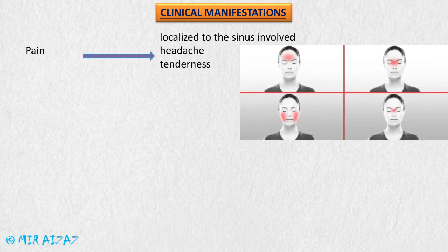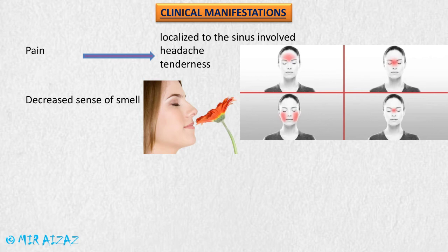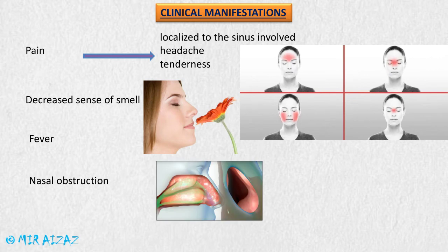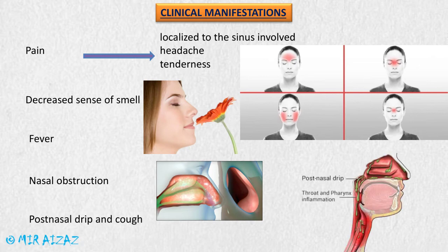Clinical manifestations include pain localized to the affected sinus area, headache, tenderness over the involved sinus, and decreased sense of smell due to inflammation of the nasal mucosa. Fever may be present due to infection. Nasal obstruction is caused by inflammation of the nasal mucosa, and post-nasal drip may cause cough.